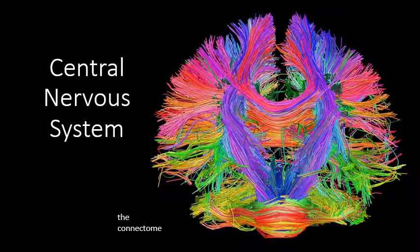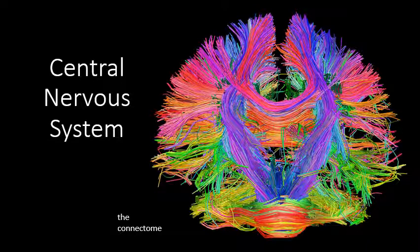Hi, my name is Claire Wells. Welcome to my presentation on the central nervous system. The image here is a representation of the connectome, which is basically a map of every long-distance axonal connection in the human brain. These lines you see in the image represent bundles of axons running from one part of the brain to another.